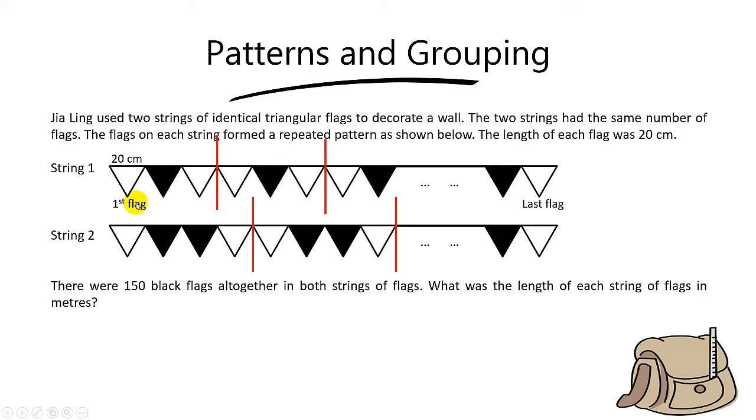Because both strings are the same length, let's find the common multiple of 3 and 4, which is equal to 12.